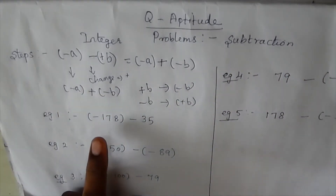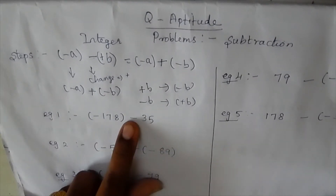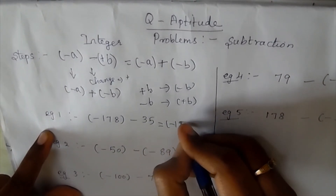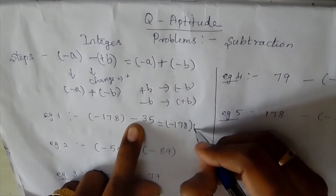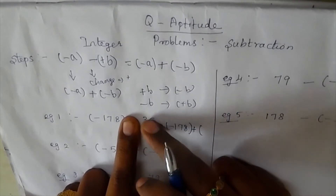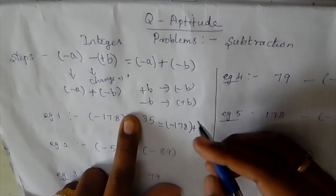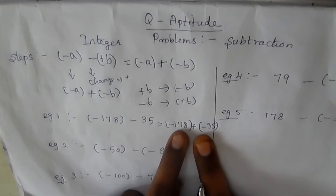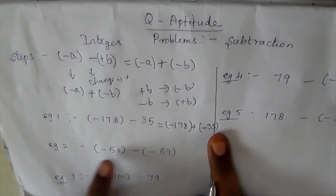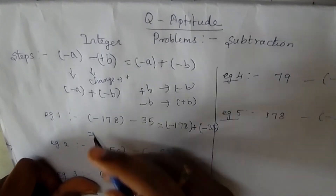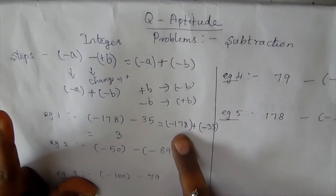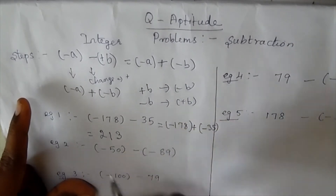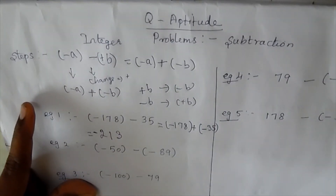Example 1: minus 178 minus 35. The first sign is minus 178. Both signs are the same, so we add. 8 plus 5 is 13, write 3, carry 1. 7 plus 3 is 10, plus 1 is 11, write 1, carry 1. 1 plus 2 is 3. Both signs are the same, so the answer is minus 213.